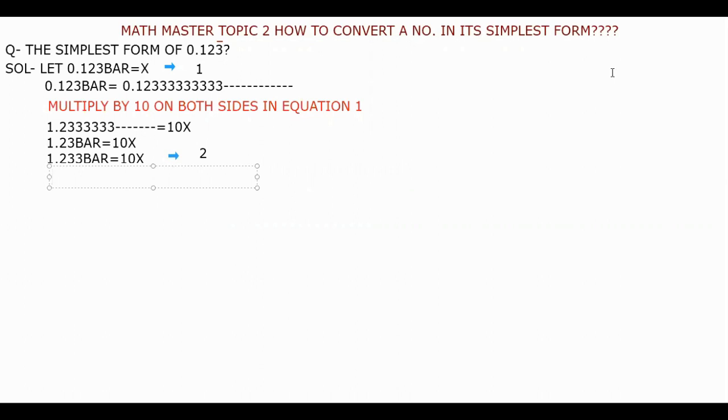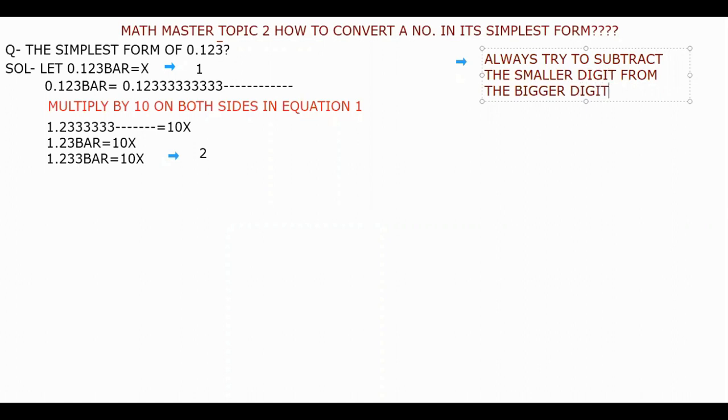Now here, for getting a rational number, you have to subtract equation 1 from equation 2, because you are seeing that equation 2 is greater than equation 1. I will mention here that it is a property of subtraction: always subtract the smaller number from the bigger digit. Otherwise, the digit we get will be negative, but we want positive. Always try to subtract the smaller digit from the bigger digit because it will make our question easy.